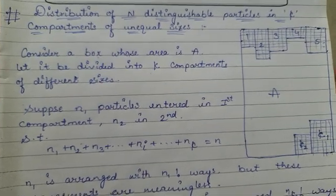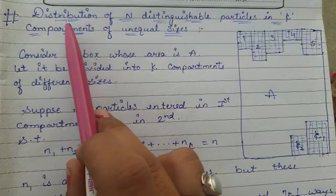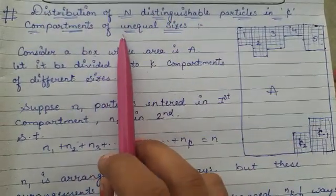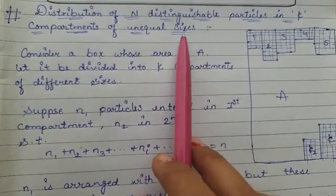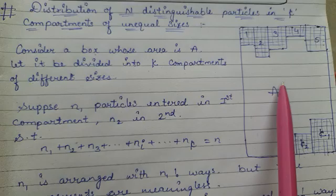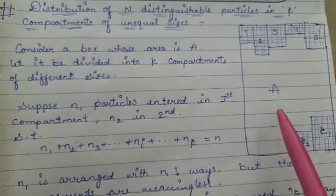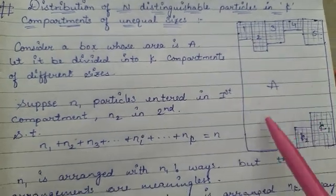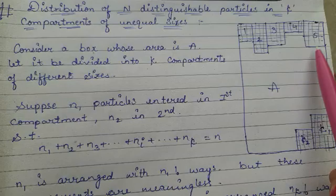Very good afternoon students. Our today's topic is how to distribute N distinguishable particles in K compartments having unequal size. Consider a box having area A and it can be divided into a number of K compartments which are having different sizes, as we see in this diagram.